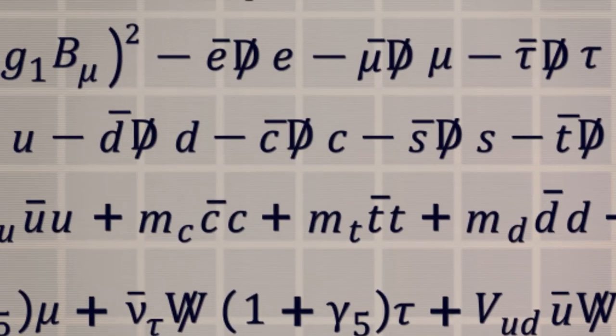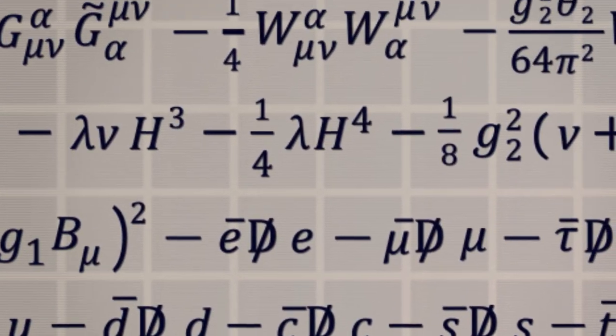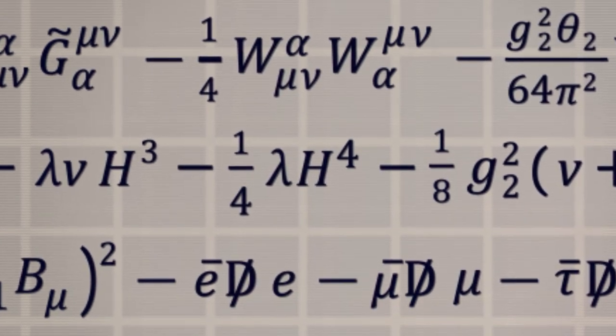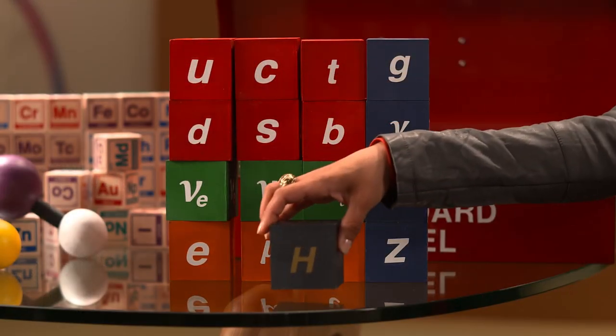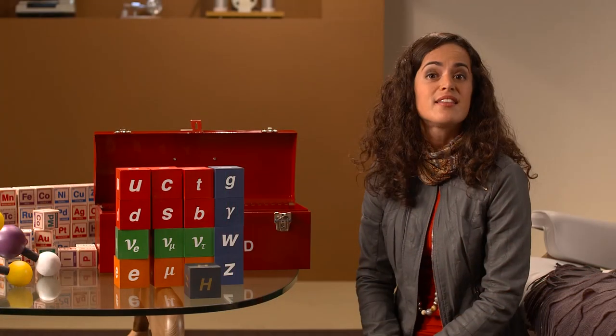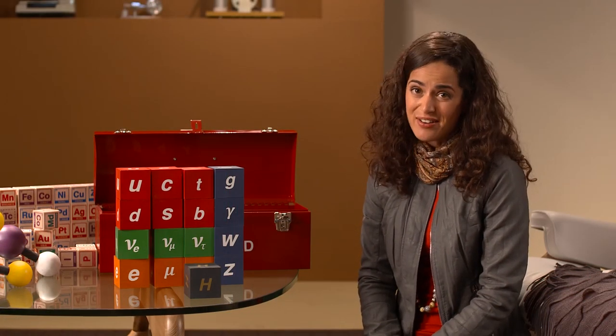Maintenant, en regardant de plus près, on remarque un terme ici. Le voici, le H. Le H correspond à une particule appelée boson de Higgs. Il a fallu des décennies et des milliards de dollars pour faire cette découverte. Alors, comment les physiciens et physiciennes pouvaient-ils être si sûrs de son existence? Pour une chose, le modèle standard ne fonctionne pas sans cette particule.